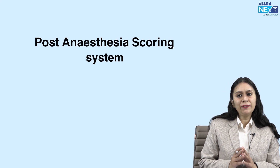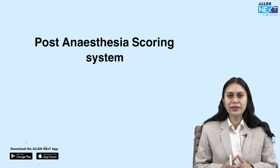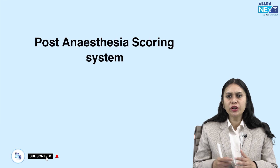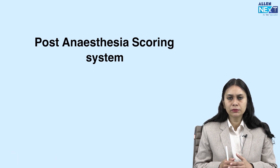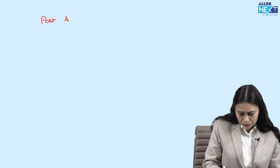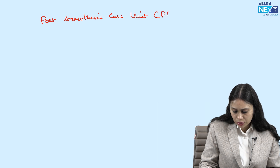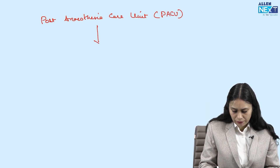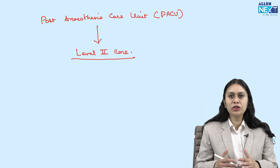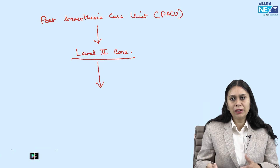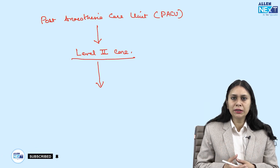In this topic I will talk about post-anesthesia scoring systems. When we take our patient out of the OT, we shift the patient to the post-anesthesia care unit, PACU. When we have to shift the patient from PACU to level 2 care, there should be some discharge criteria which the patient has to fulfill. And if we have to discharge the patient from level 2 care and send the patient home, again the patient has to fulfill some criteria.